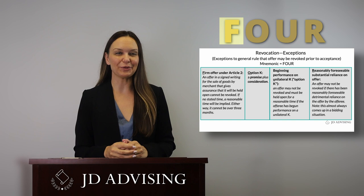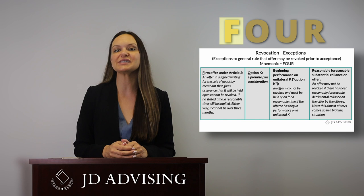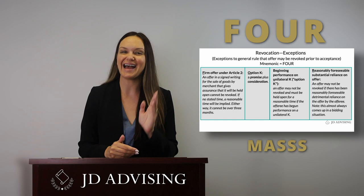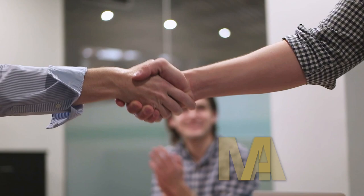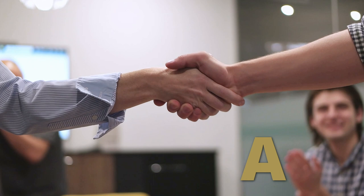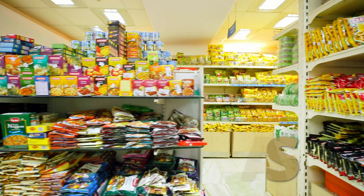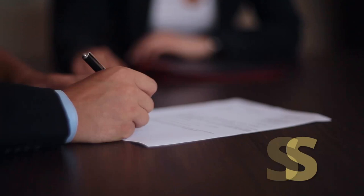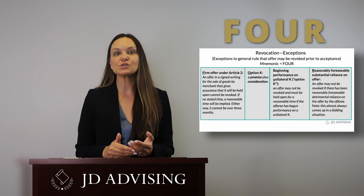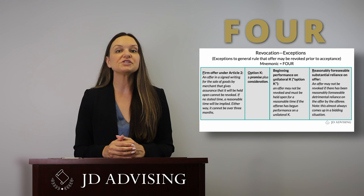The F of FOUR stands for firm offer, applicable under Article 2 of the UCC. In order to have a firm offer, it requires MAS: a merchant who gives their assurance that they will hold the offer open, meaning they're promising to hold it open; it's a contract for the sale of goods; there's a signed writing; and it's held open for a stated time. If the promise to hold the offer open does not state a time, the default rule kicks in, which states it will be held open for a reasonable amount of time, not to exceed three months.